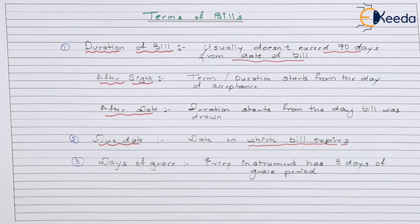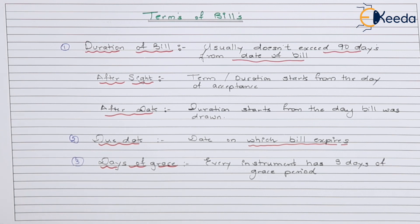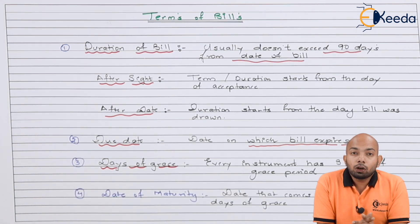The next terminology is the grace period. Every instrument — be it a bill of exchange or promissory note — has three days of grace period after the date of expiry. For example, if the 1st of January is the date of expiry, then three days after that — the 2nd, 3rd, and 4th — means the 4th of January becomes the actual end date for expiry. Three days are still provided to pay up the bill.